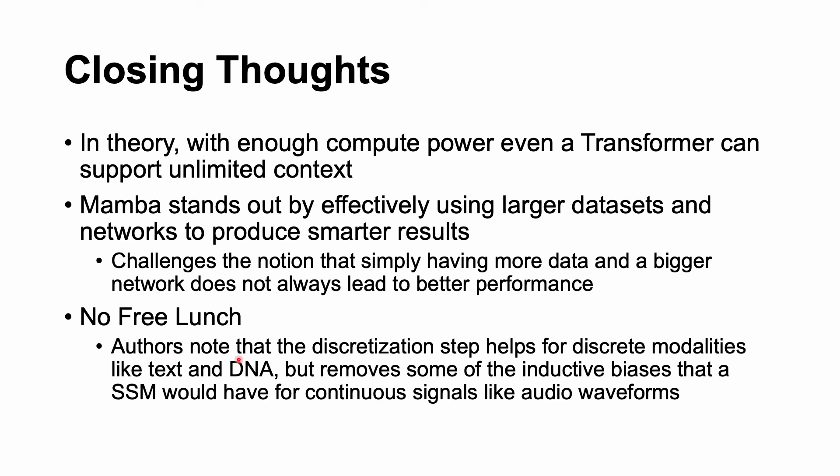The authors actually note that the discretization step helps for discrete modalities like text and DNA. But if we were to apply this model on a continuous format such as audio, we might remove some of the inductive biases that come along with that kind of continuous form. How do we decide what and how to discretize? How do we decide what to chop up? How do we decide what parameters and where the parameters are chopped up?